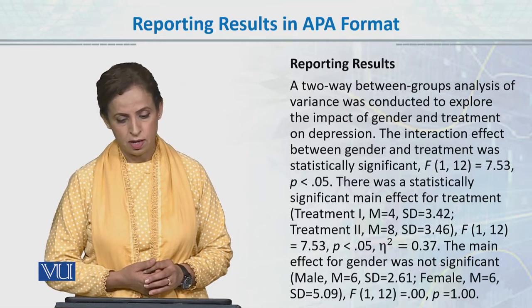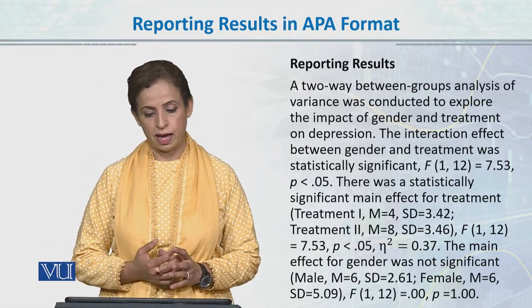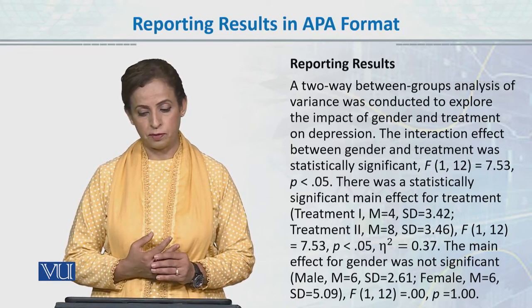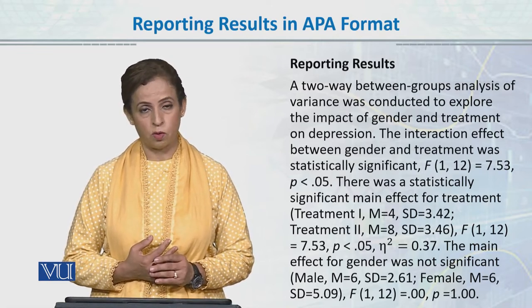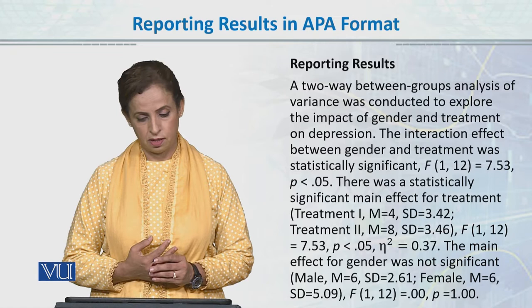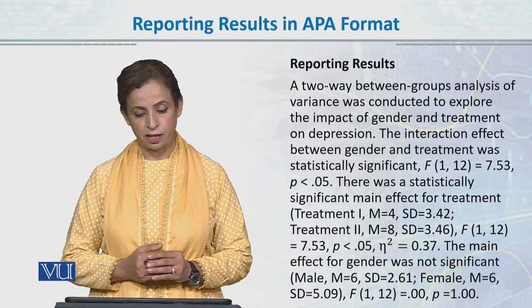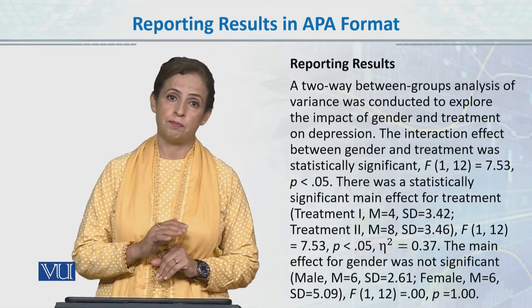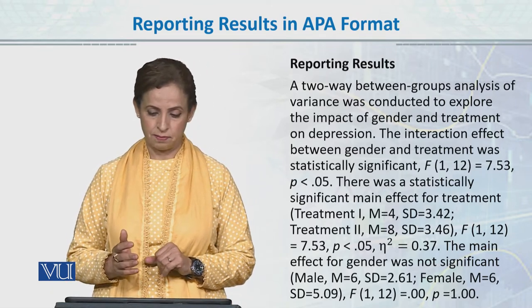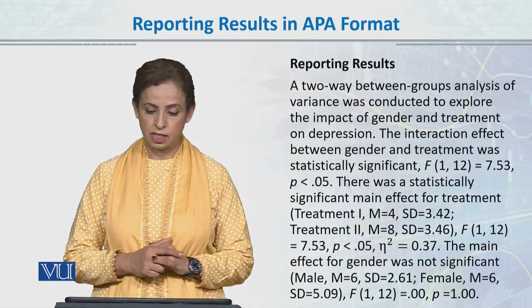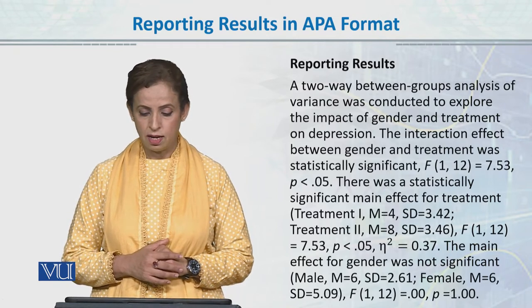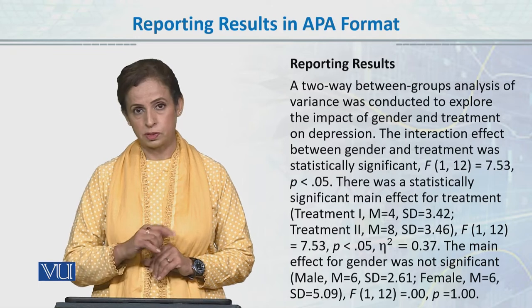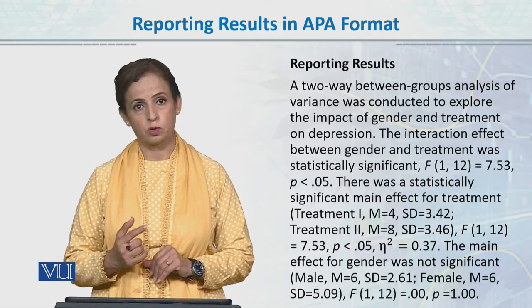I will read it for you. Our two-way between-group analysis of variance was conducted to explore the impact of gender and treatment on depression. We always report the interaction effect first, and then we report the main effect. The interaction effect between gender and treatment was statistically significant, and then we report the values.